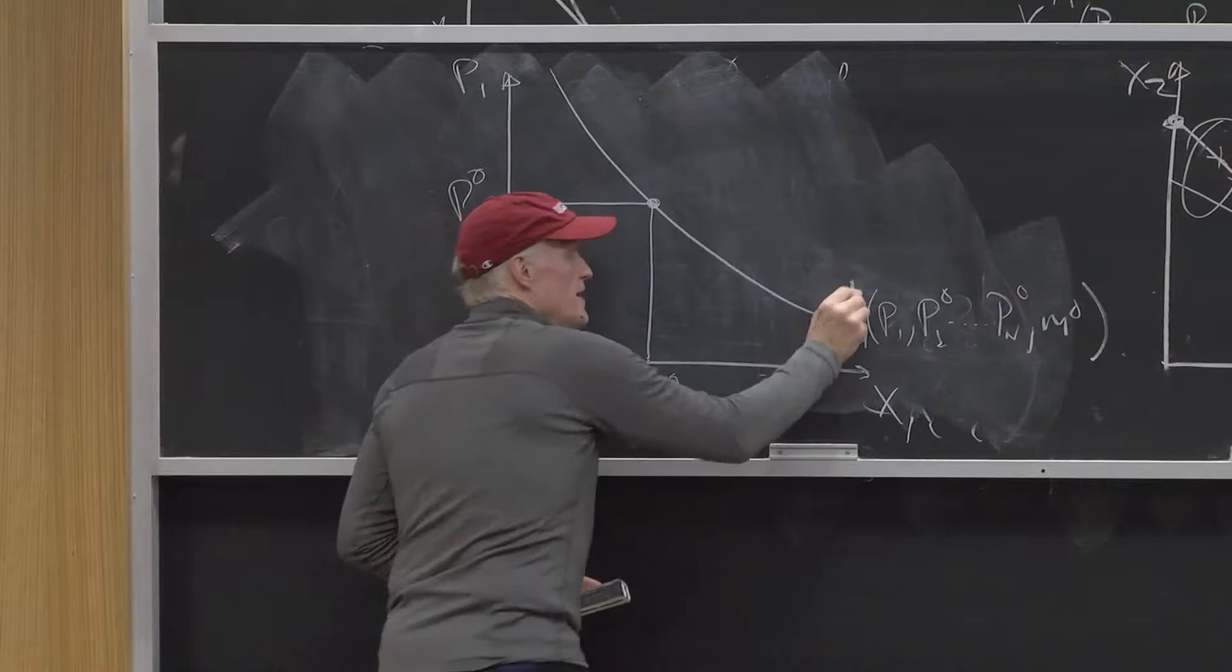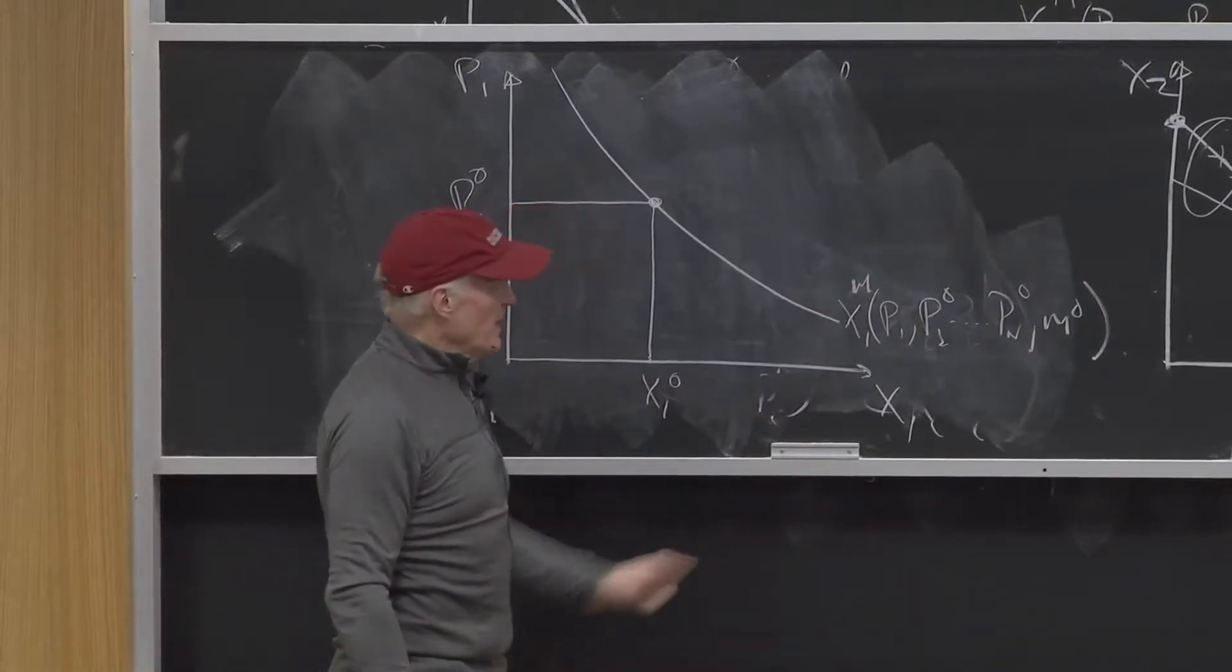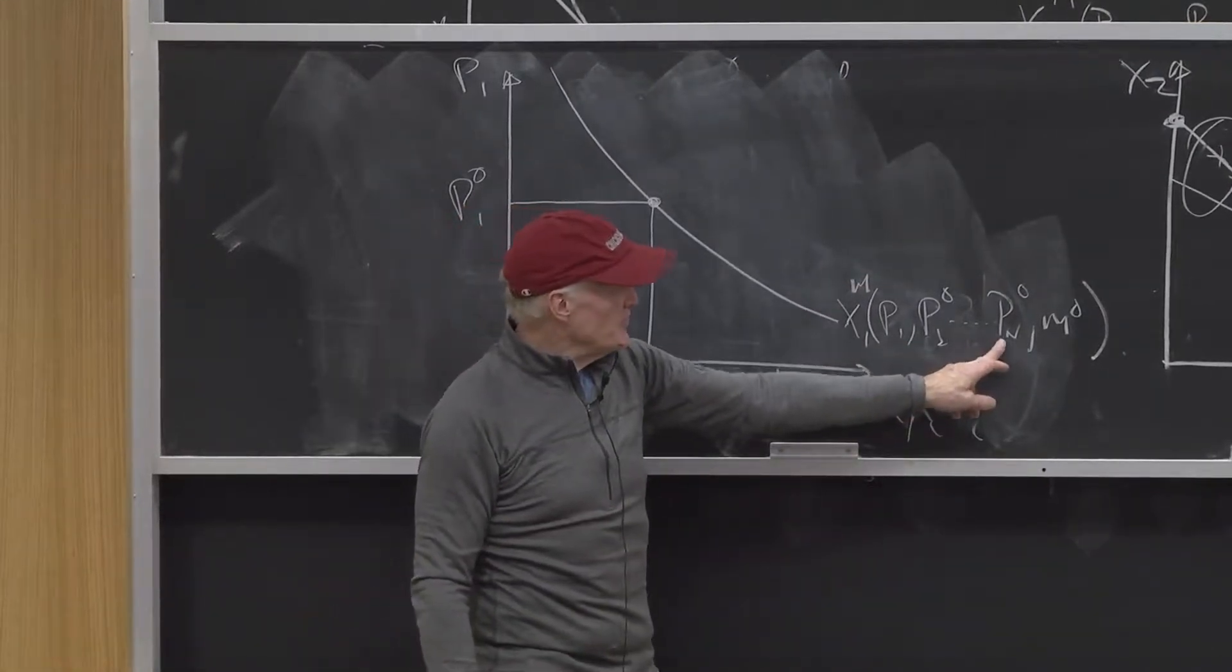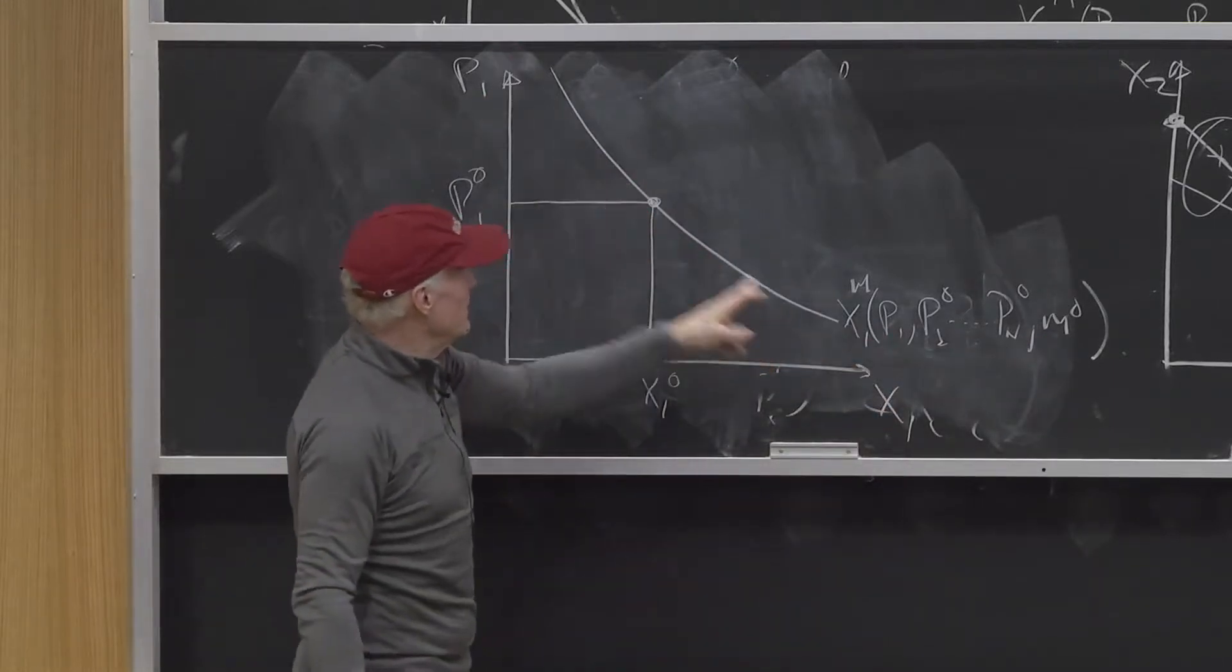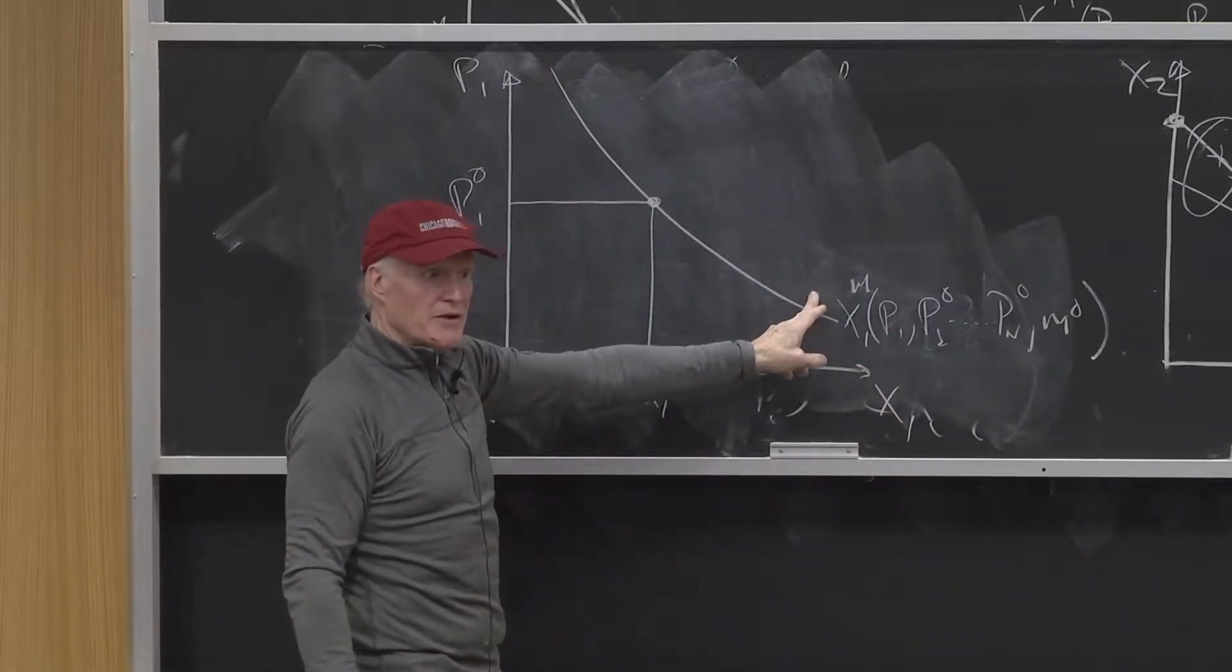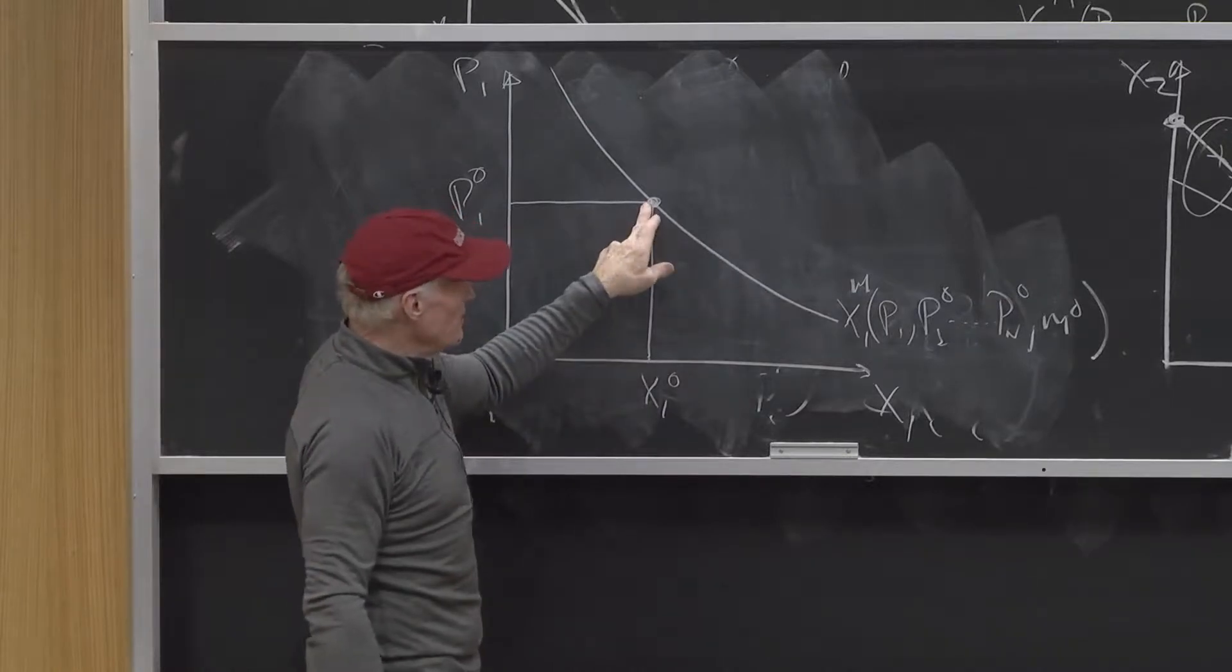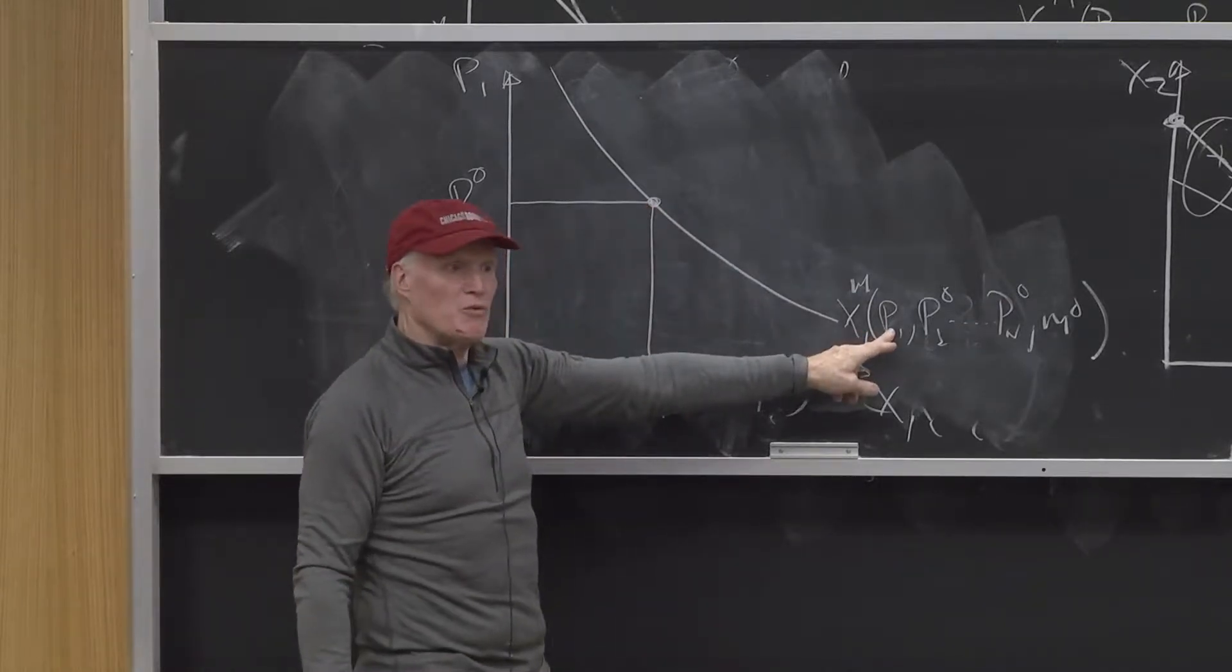So that's my Marshallian demand curve, corresponding to some initial set of prices, initial income, and I'm letting the price of good one vary. That traces out my Marshallian demand curve. That's my initial point, and if I'm just going to change the price of good one.